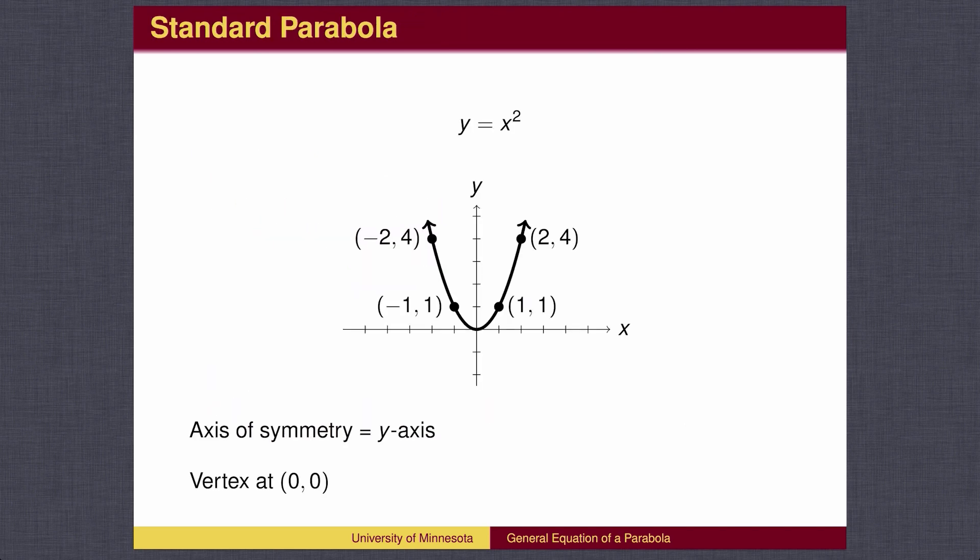The standard parabola is y equals x squared. The y-axis is the axis of symmetry. The parabola looks the same to the left of the y-axis as it does to the right of the y-axis. The point on the axis of symmetry which divides the parabola into two equal branches is called the vertex, which in this case is at the origin.